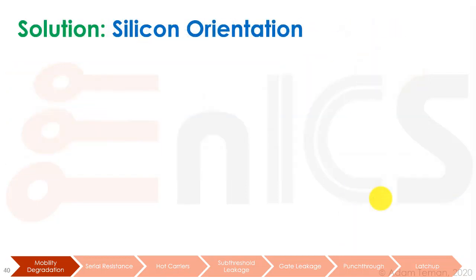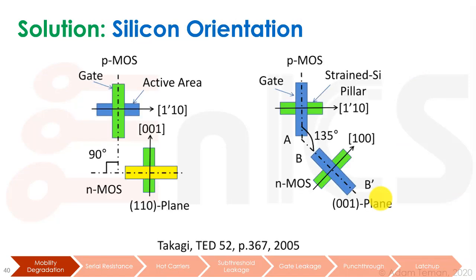Another thing worth looking at is the silicon orientation. We know there's a Miller index, which is basically the direction the silicon is cut. A silicon wafer is usually cut at direction 100. But if you cut the silicon differently, by changing the orientation of the cut, both PMOSs and NMOSs get different mobilities for different Miller indexes. So it has also been explored to give the channel a different orientation to improve mobility.